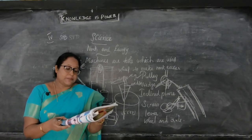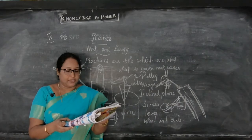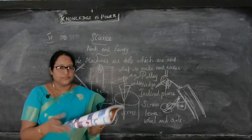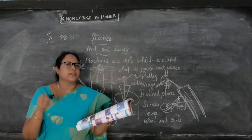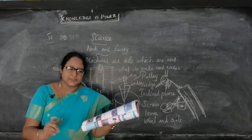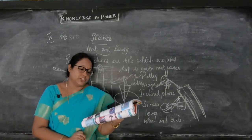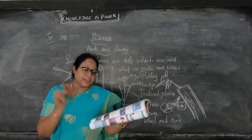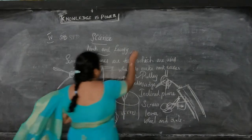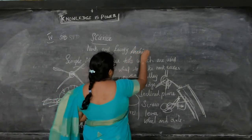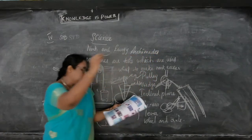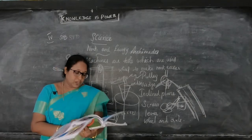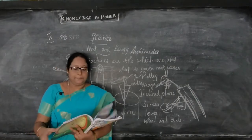Simple machines usually exchange a smaller force to move a heavy object. The work required is the same but the force needed is less when using simple machines. The idea of simple machines originated with the Greek philosopher Archimedes in the 3rd century BC.